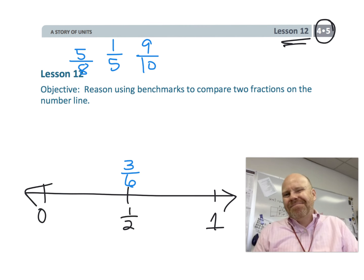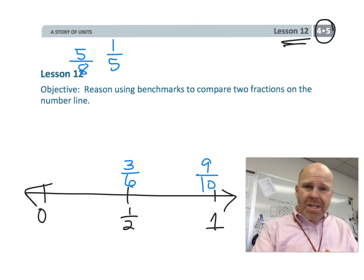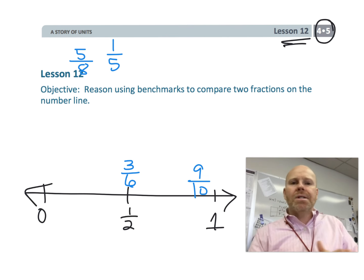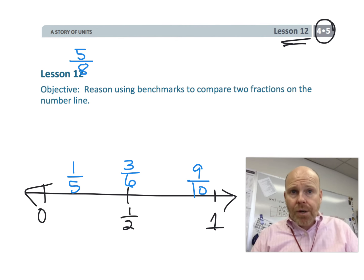We look at nine-tenths—that's almost one whole, almost ten-tenths, so we can put it somewhere right here around one. One-fifth, that's barely anything. If we know five pieces is one whole and we have one out of five pieces, that puts it way down here towards the zero side.